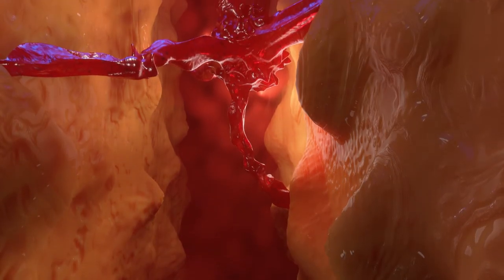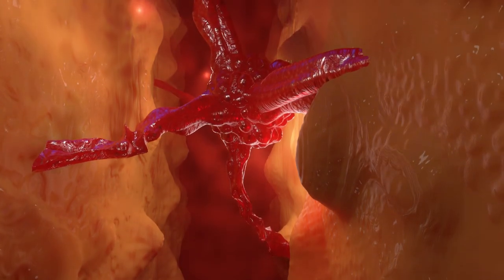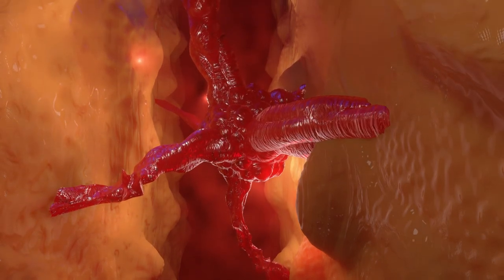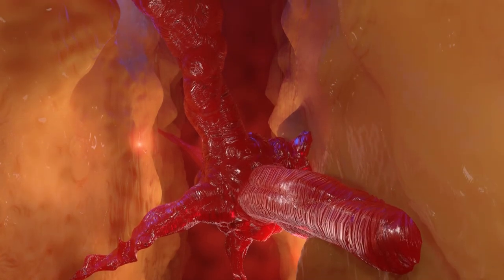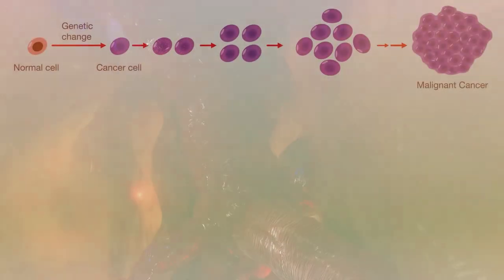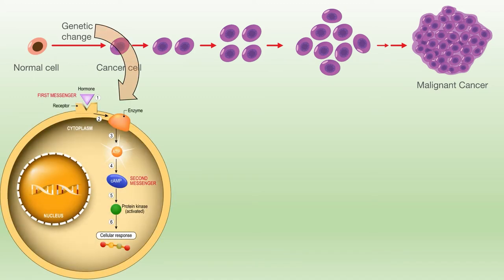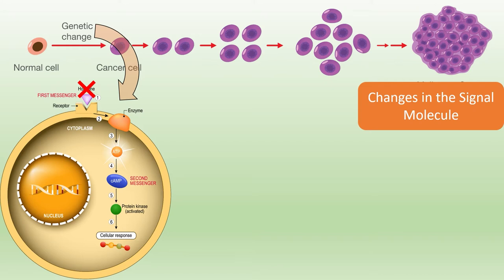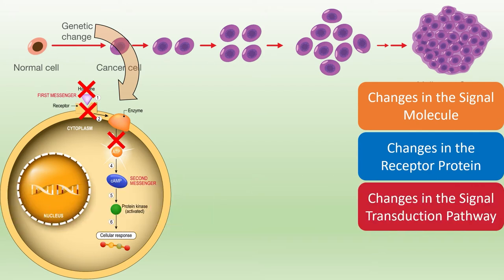Cancer can be a terrible and devastating disease, but a large number of cancers are caused by mutations within signal transduction pathways. Without these pathways to control and modulate their growth, cancer cells grow out of control, forming tumors and metastasizing to different areas all over your body. In this video we'll take a look at how mutations within the genes that control various aspects of signal transduction pathways can render a pathway completely useless and even cause cancer and other diseases.